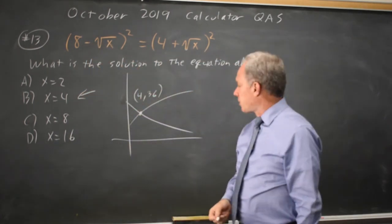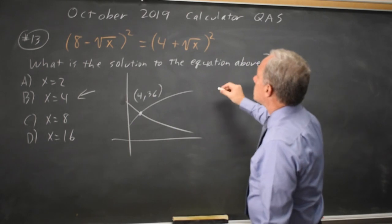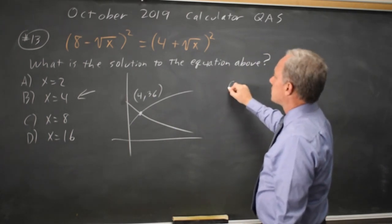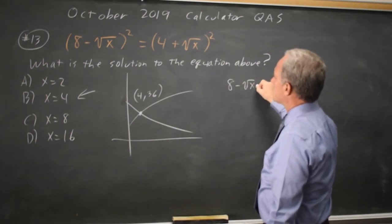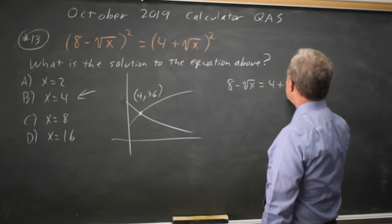If you want to do this without a graphing calculator, we can square root both sides. 8 minus root x equals 4 plus root x. Keep in mind this could be a plus or minus,